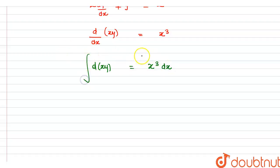Now we integrate both sides. This becomes xy = x⁴/4 + C, where C is the integration constant.